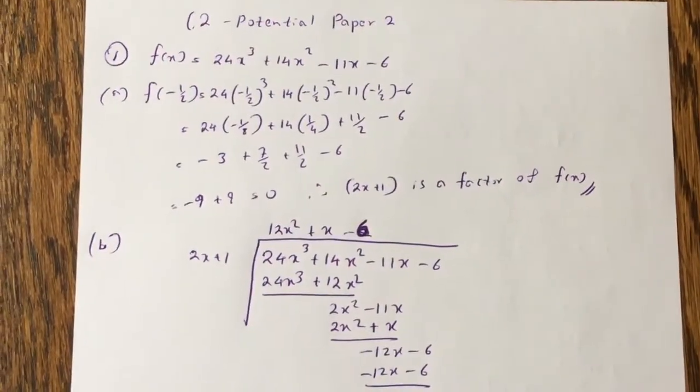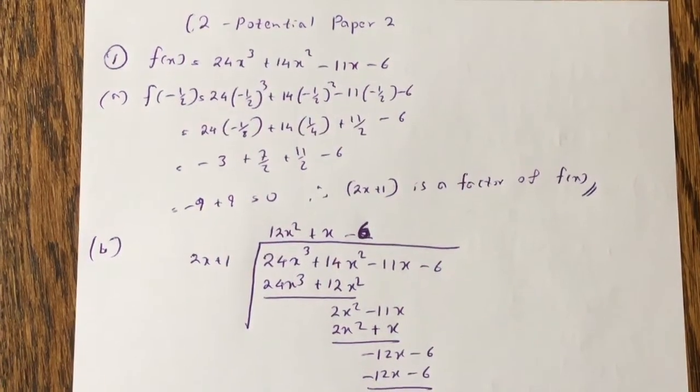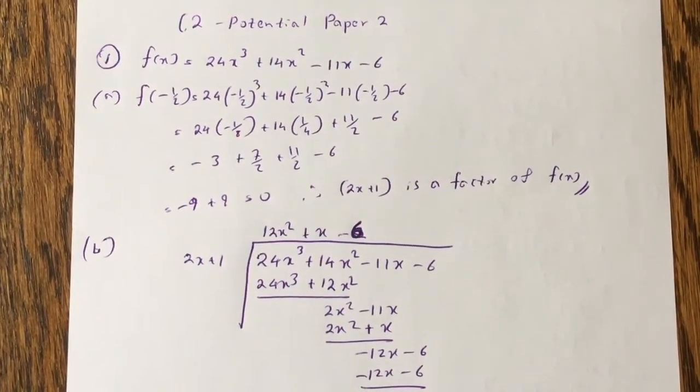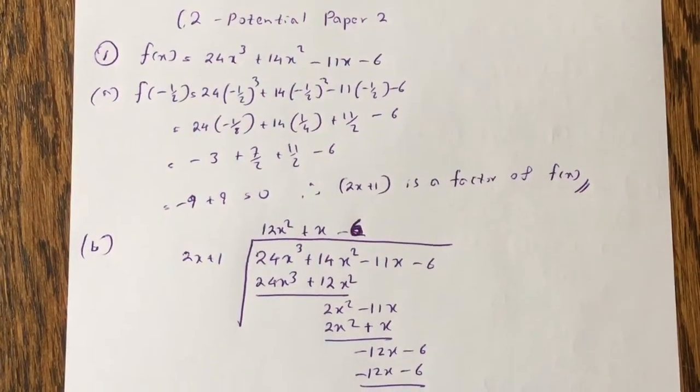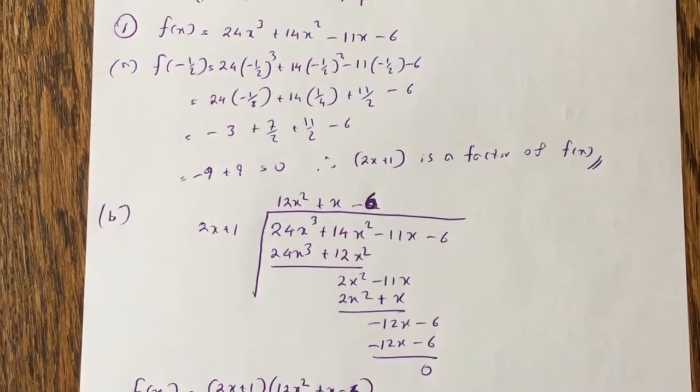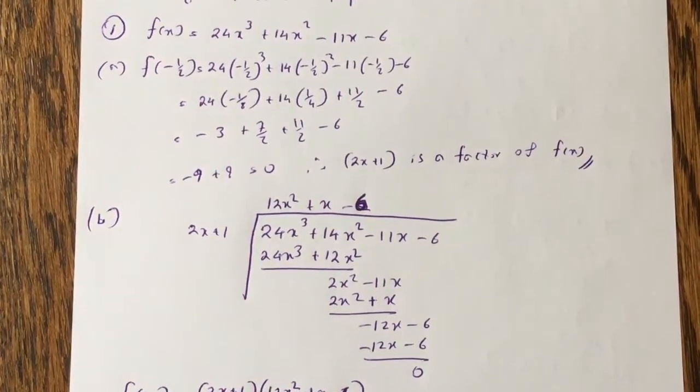Okay guys, this is all the mark scheme for the potential paper 2 for C2. So question 1, fx is equal to 24x cubed plus 14x squared minus 11x minus 6. And when you put f of minus half, you get 0, so therefore 2x plus 1 is a factor of fx.